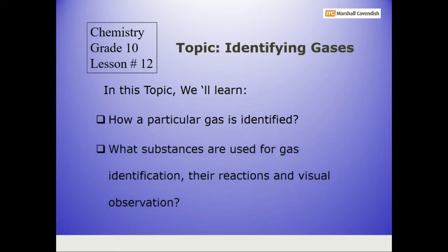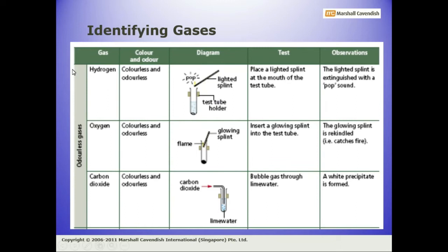What substances are used for gas identification, their reactions and visual observations. There are six gases in your syllabus. Out of these six gases, here are the three gases: hydrogen, oxygen, and carbon dioxide. These are odorless gases, meaning you cannot feel any smell of these gases. These are also colorless. It is difficult to identify the presence of these three gases, so we have to perform certain tests.